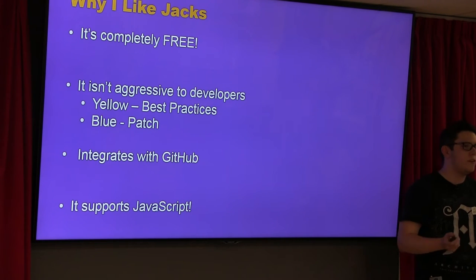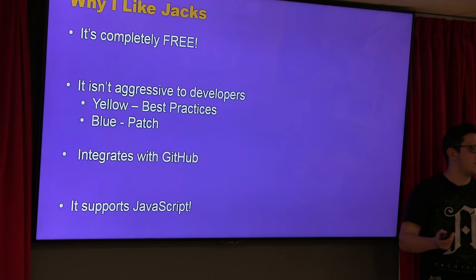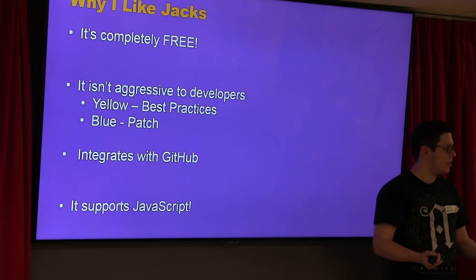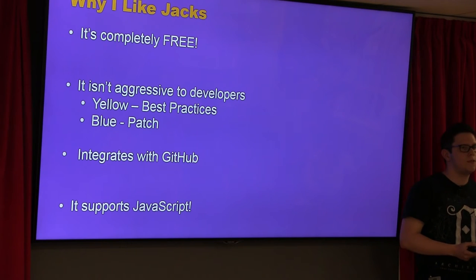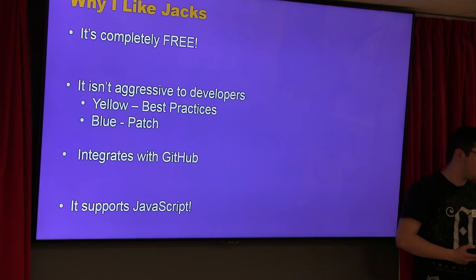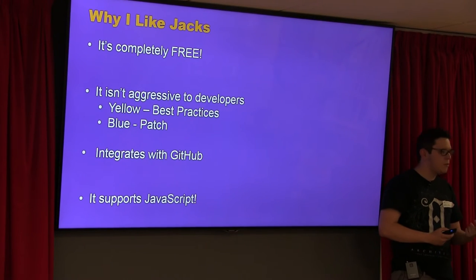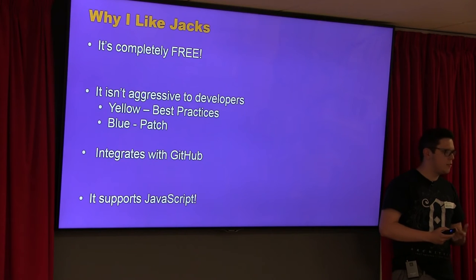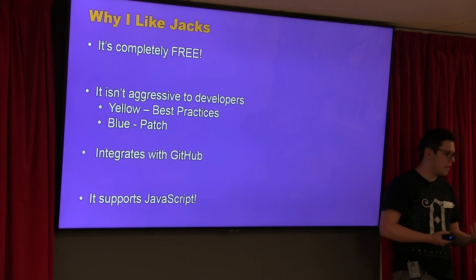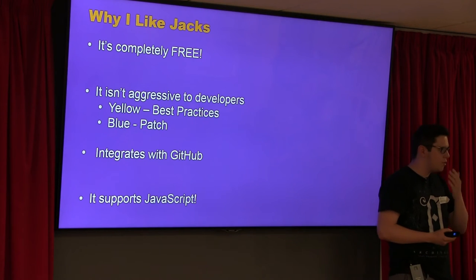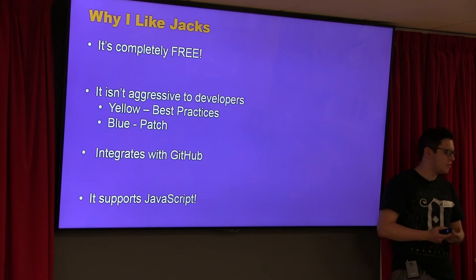Why do I like Jax personally? It's completely free. At the moment you can just sync up your Git and import hundreds of repos just to see if it's any good. It's still very new — only been out for about three months. The reason I also like it is it's not aggressive to developers. Yellow is best practices and blue is patch. Before, people were just getting shouted at — you've got five instances of XSS to fix. This tries to give you a deep understanding of the issue, offers code fixes where possible, integrates with Git, and it supports JavaScript. A lot of other tools don't really look into JavaScript, or try to and fail at certain hurdles.